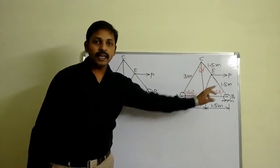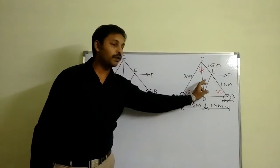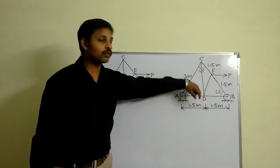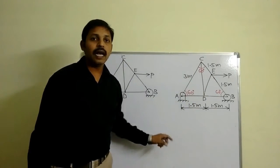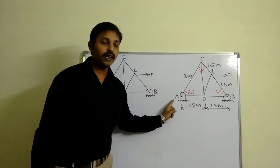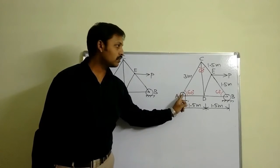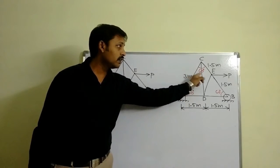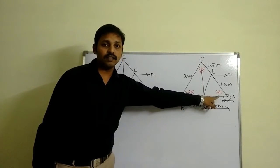ABC is an equilateral triangle. A force P is applied at point E. P is a horizontal force. You are supposed to calculate member C. As mentioned, ABC is an equilateral triangle. Around each corner, the angle is going to be 60 degrees — here the angle is 60 degrees, here the angle is 60 degrees, and here the angle is 60 degrees.